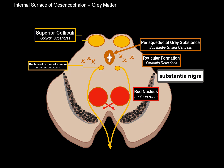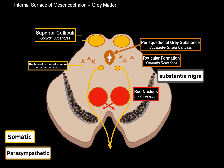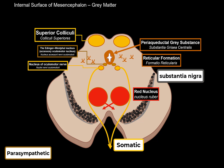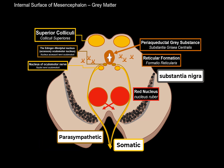The oculomotor nerve travels toward the anterior side and exits through the sulcus of the oculomotor nerve on the anterior midbrain. The nerve consists of somatic fibers from the nucleus of the oculomotor nerve, which supply the extrinsic muscles of the eyeball voluntarily, and preganglionic parasympathetic fibers from the accessory nucleus — the Edinger-Westphal nucleus — which run together forming the oculomotor nerve complex.